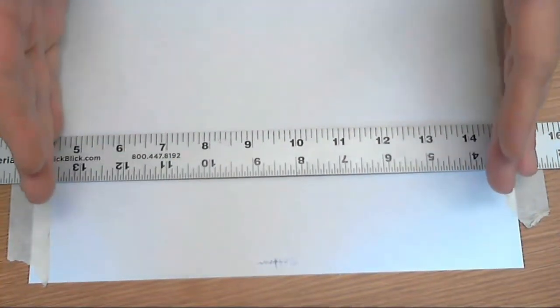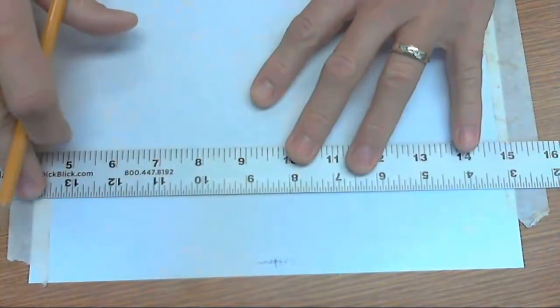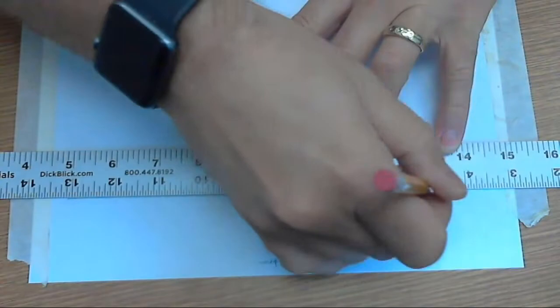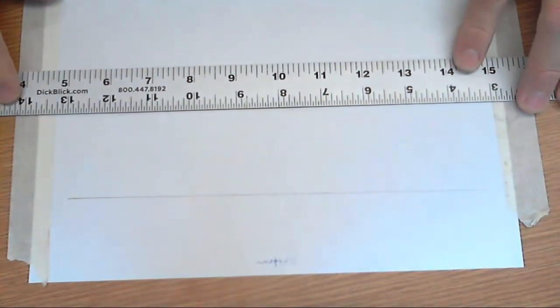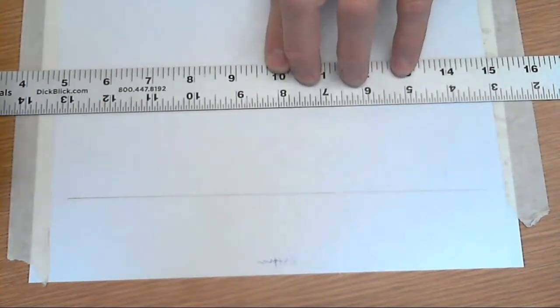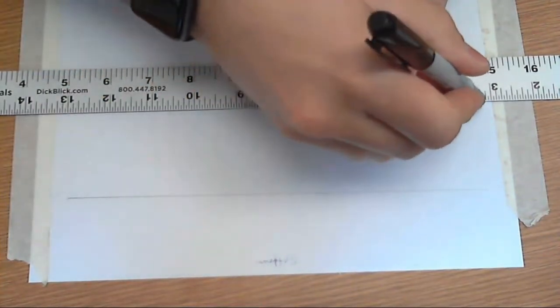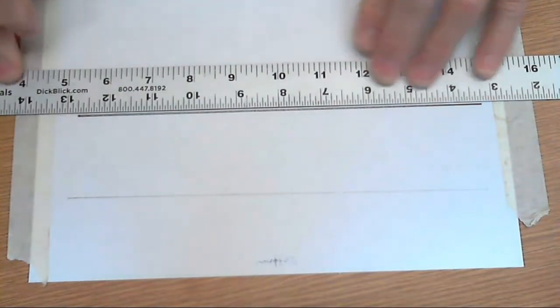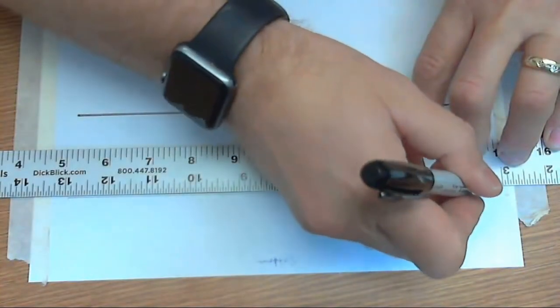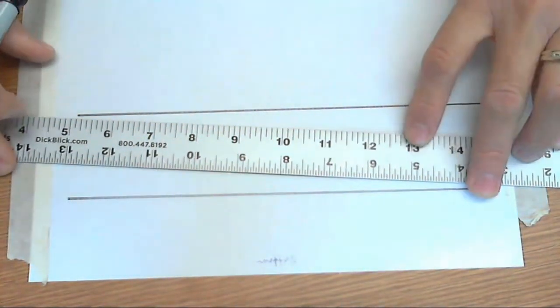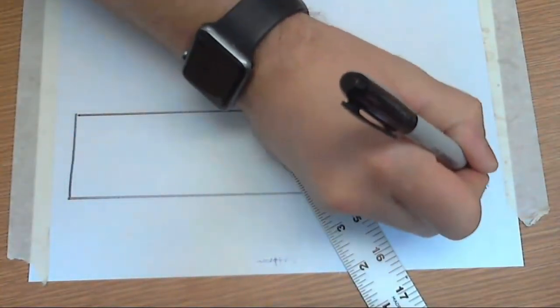So you're gonna want a clean piece of paper and we're gonna make a nice long wide rectangle. You don't have to use a ruler for this, but I'm gonna draw this with a nice thick black line using a marker. That's just gonna make it easier for you to see.